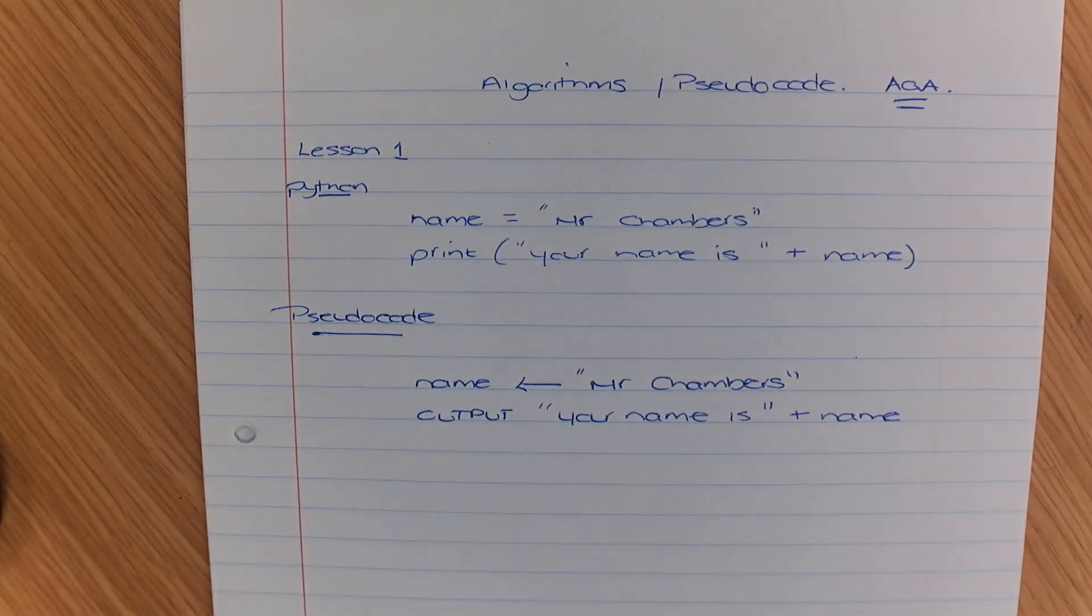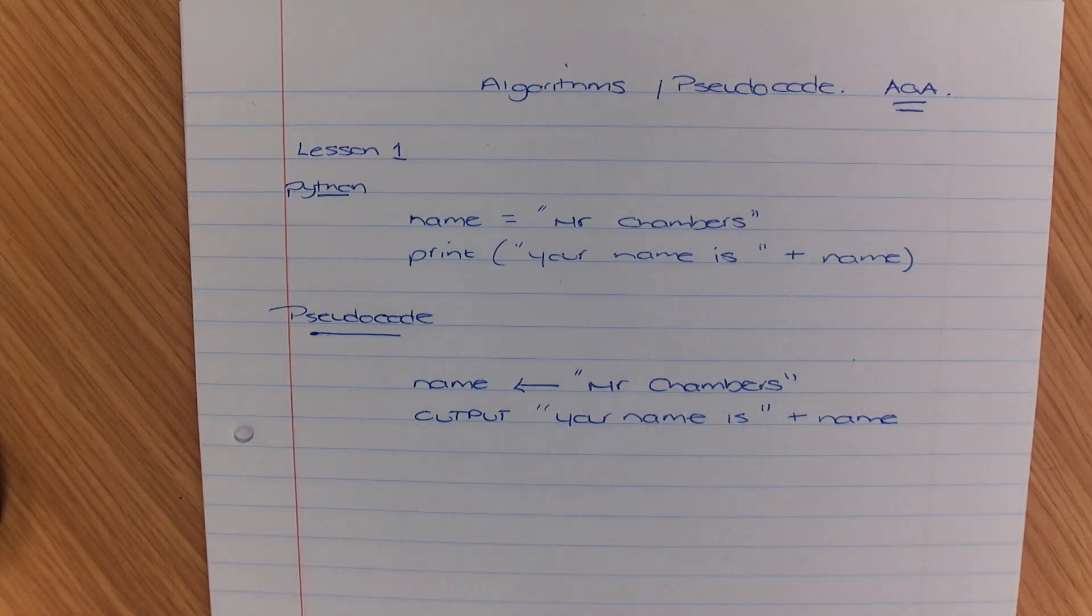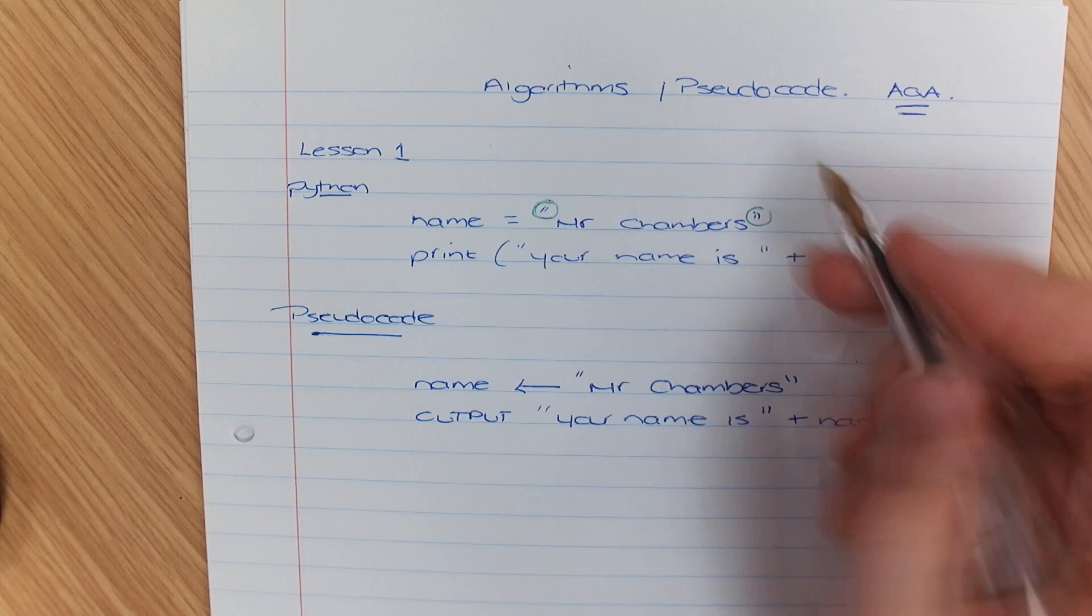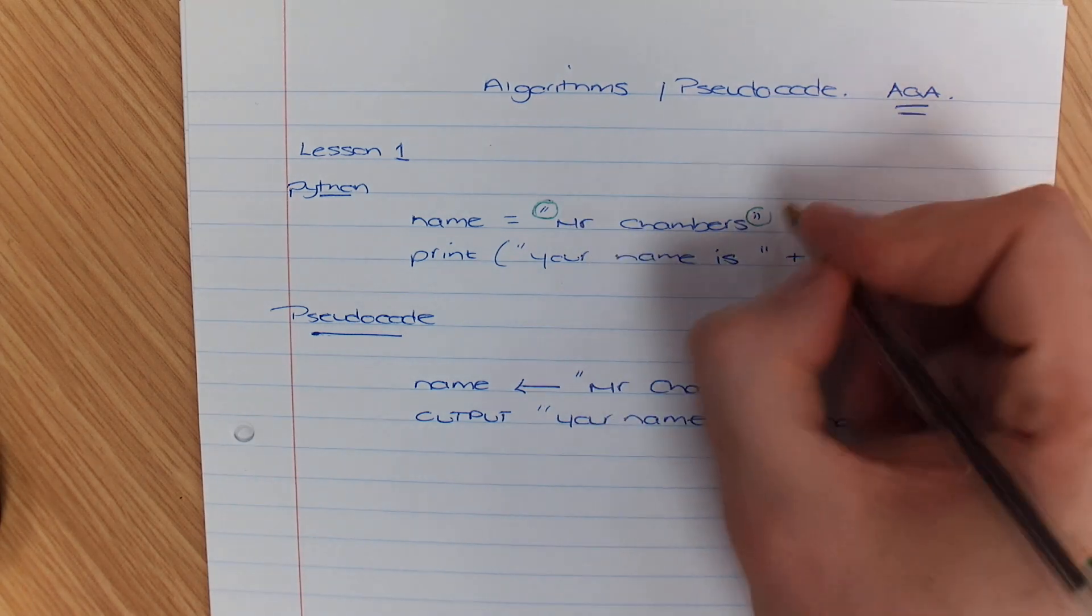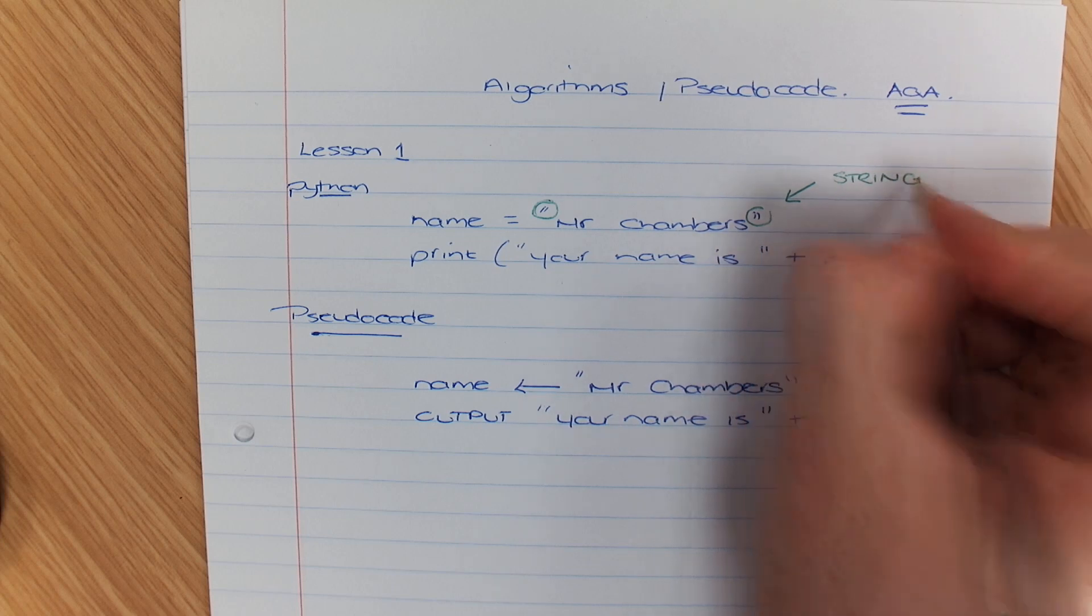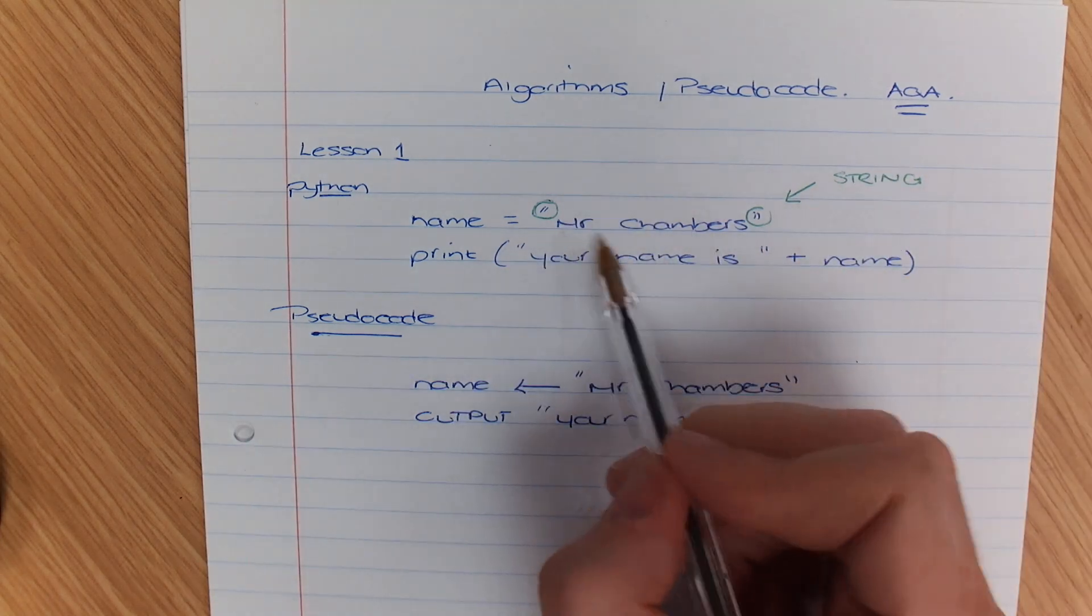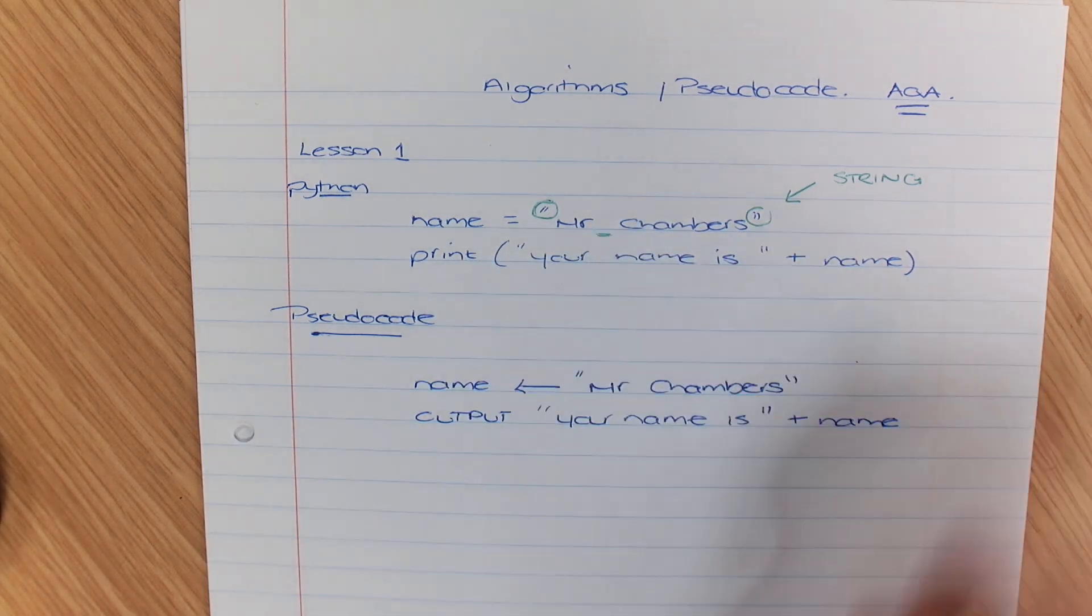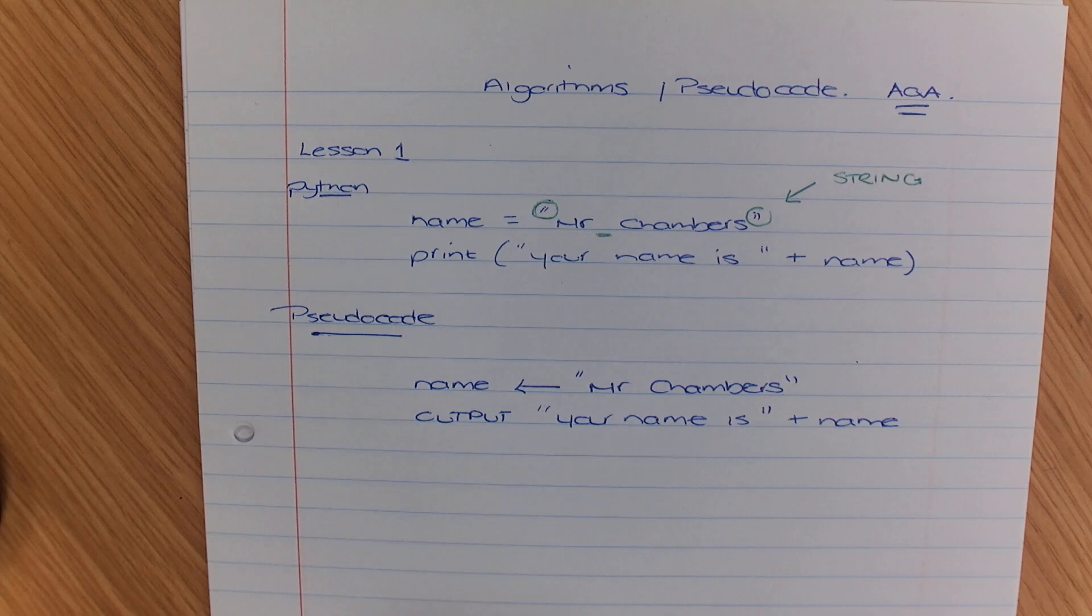Now one thing to pay close attention to here is how to tell whether something is a string or a float or an integer. These speech marks here tell us that we are working with a data type known as a string which is a group of characters or alphanumeric characters I should say, so you can see here even the space in the middle counts as one of those.